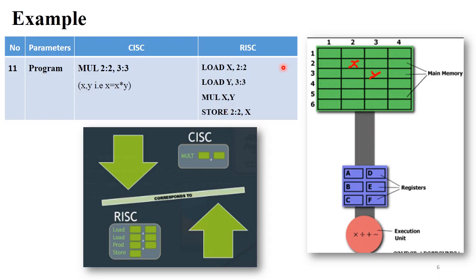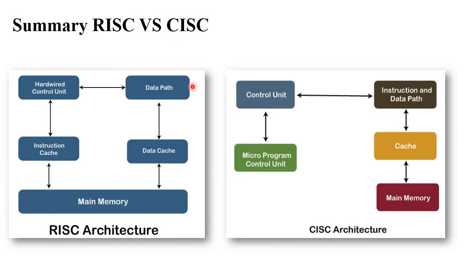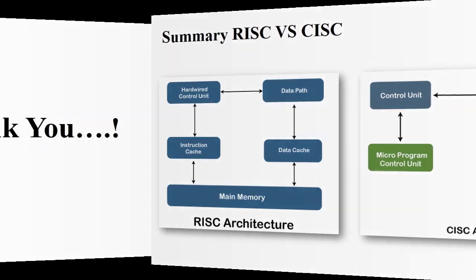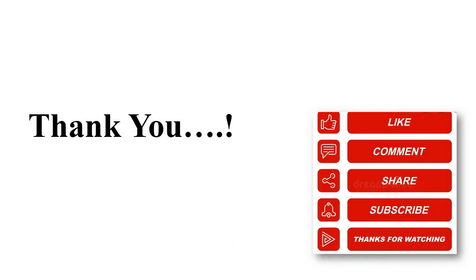This is the basic difference between CISC and RISC architecture. In summary, CISC architecture performs every operation with main memory using a micro program control unit that generates different instructions. In RISC architecture, there is a main memory and a hardwired control unit where fixed operations are performed. Thank you.